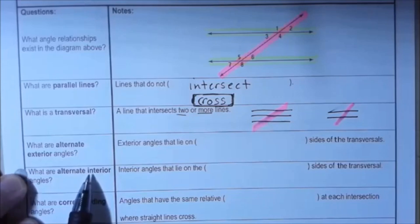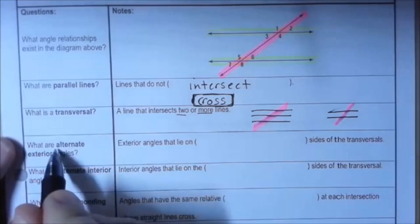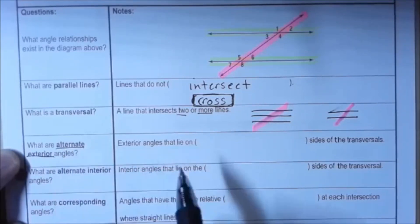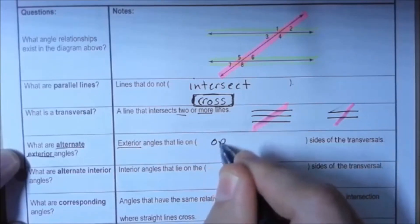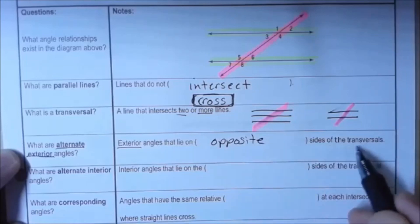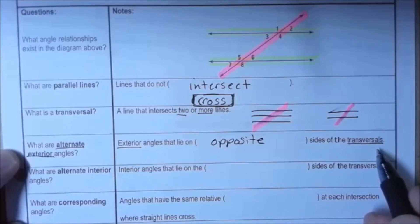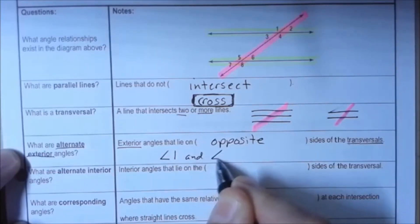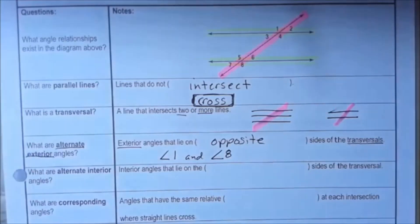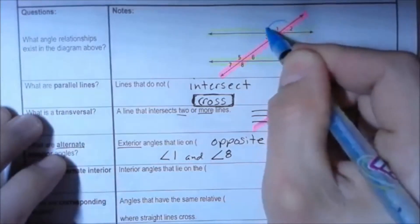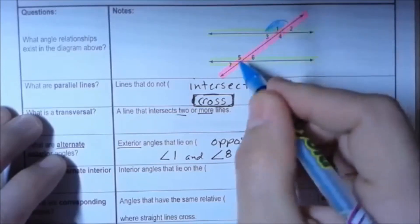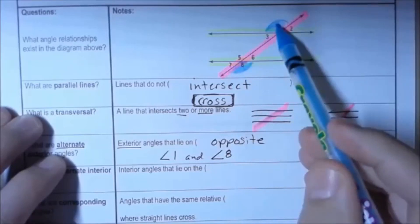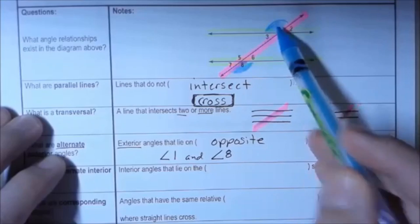Now we're going to look at alternate exterior angles and alternate interior angles. Alternate exterior angles are exterior angles that lie on opposite sides of the transversal. For instance, angle one and angle eight — one is on the left side and one is on the right side of the transversal — so those are alternate exterior angles.